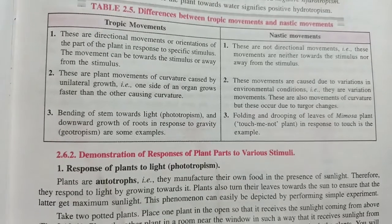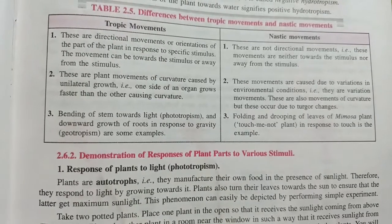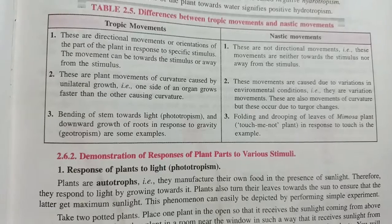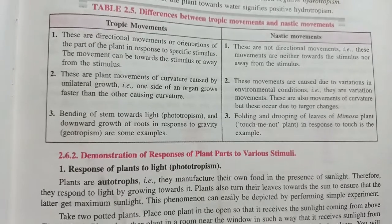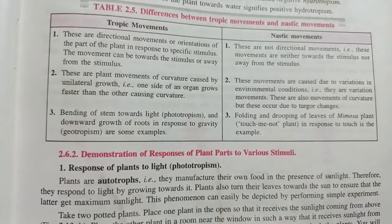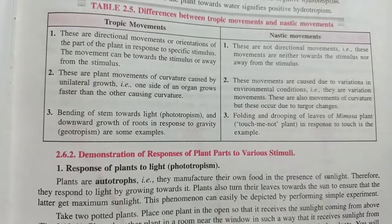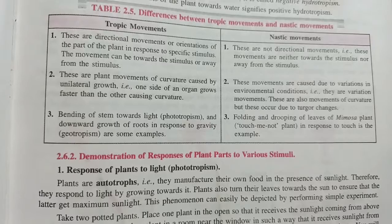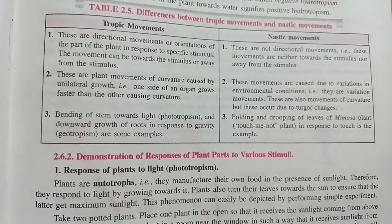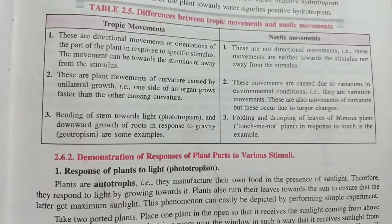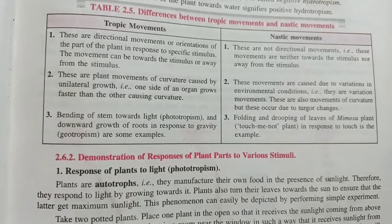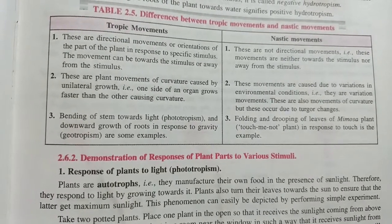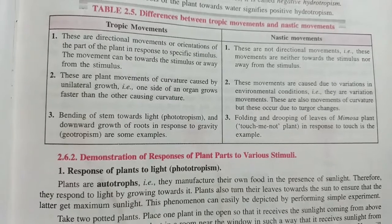Nastic movements are caused due to variation in environmental conditions, that is, they are variation movements. These are also movements of curvature, but these occur due to turgor changes.